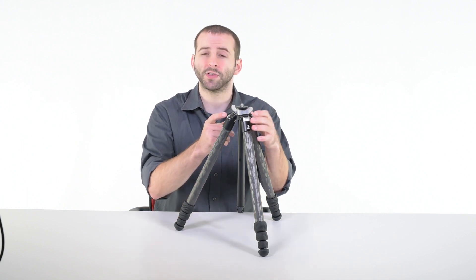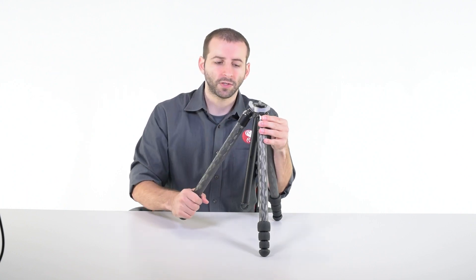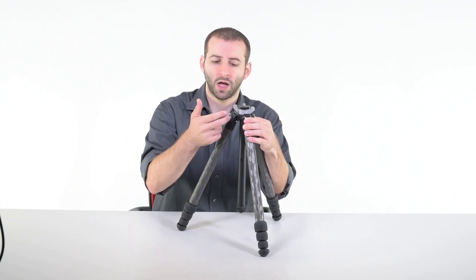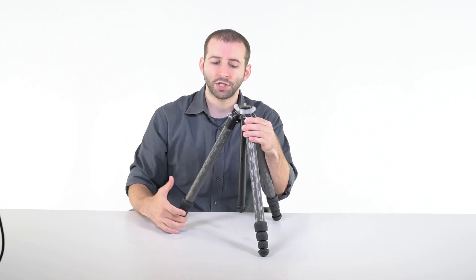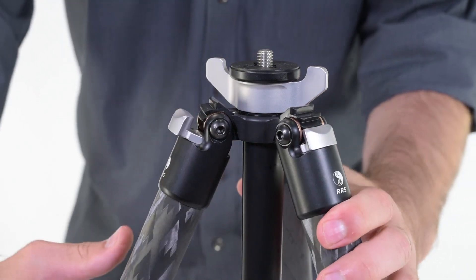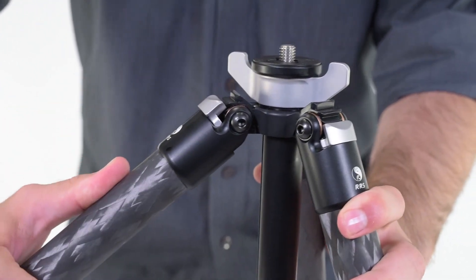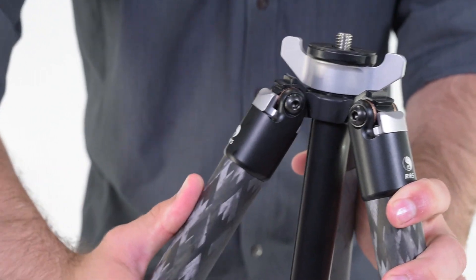Like all of our other carbon fiber tripods, the TQC14 features a three-position ratcheting angle stop. When engaged, you can articulate the leg all the way up to its highest position. The angle stop will then engage and ratchet to each of the subsequent settings.